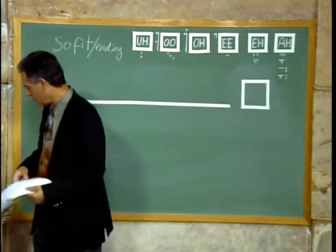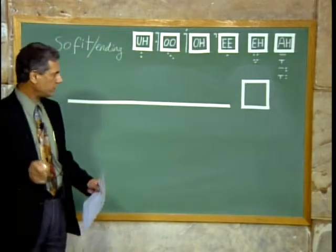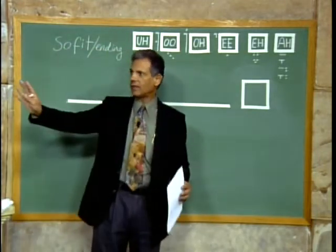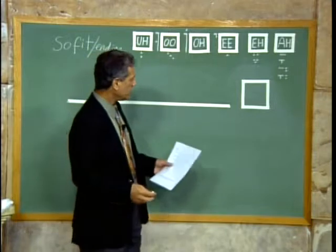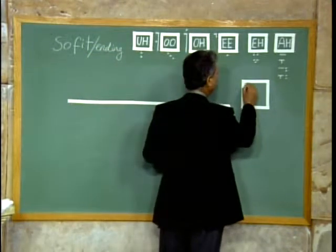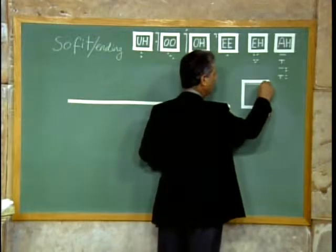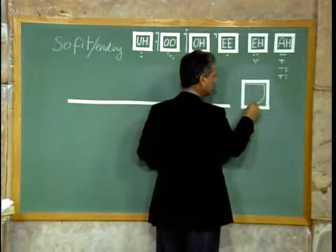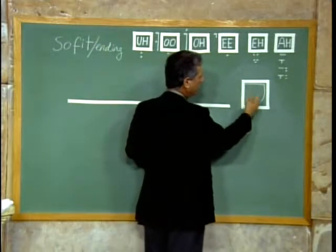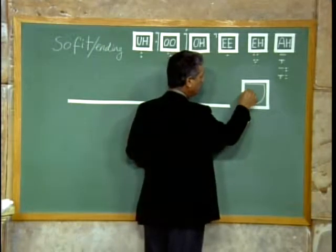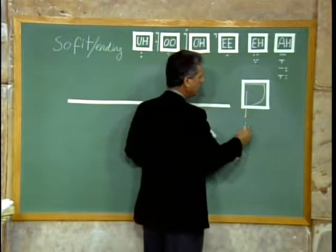This time I want to start by working on the letter Kuf. We're getting to the end of the Hebrew letters. The letter Kuf is written in this way: you start at the top and you go back, then you come down and you curve. Then you start about the middle of the square and you come down below the line. That is the Kuf.